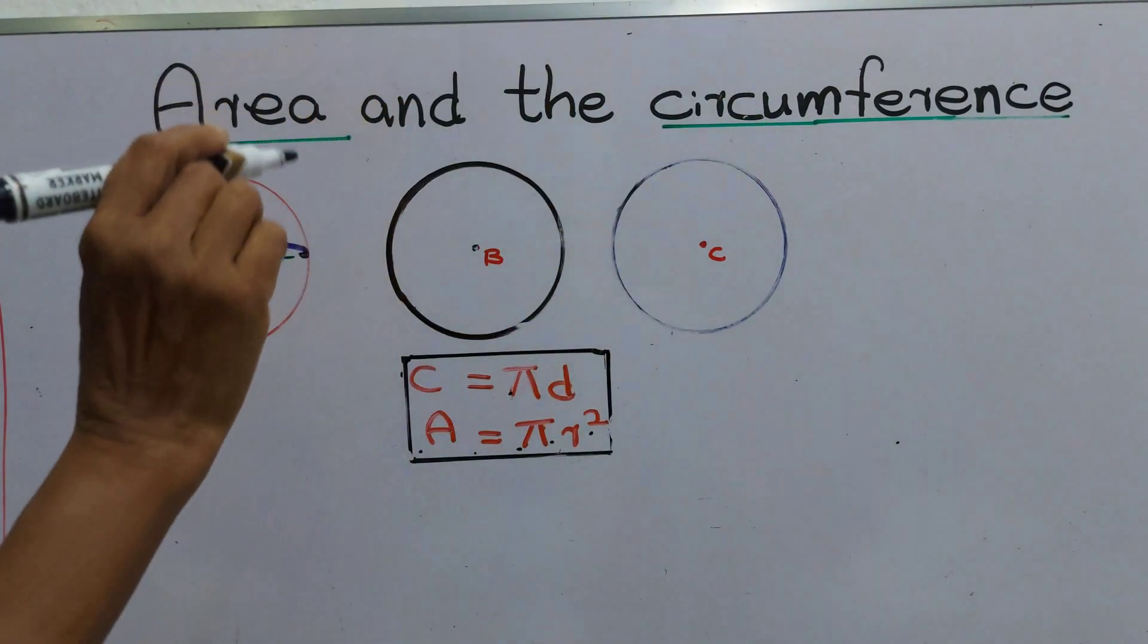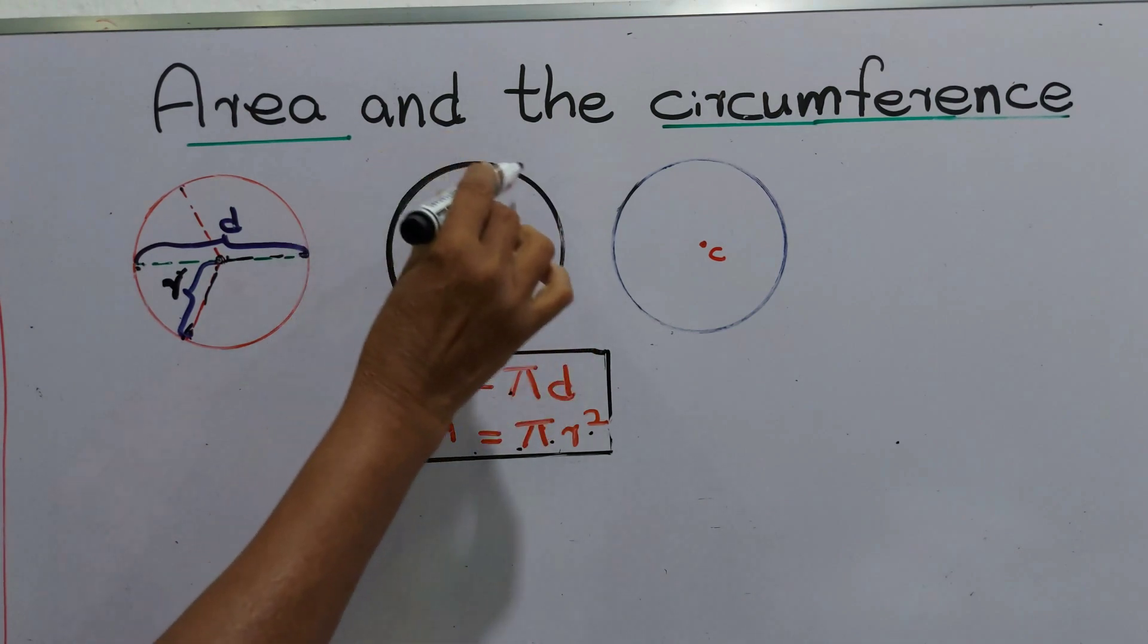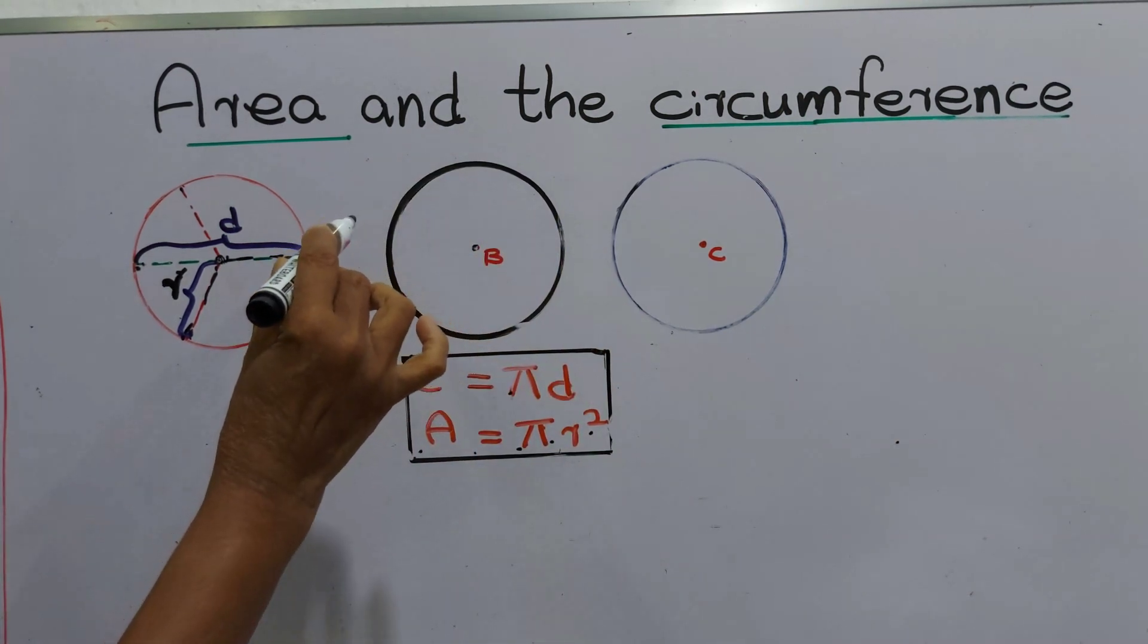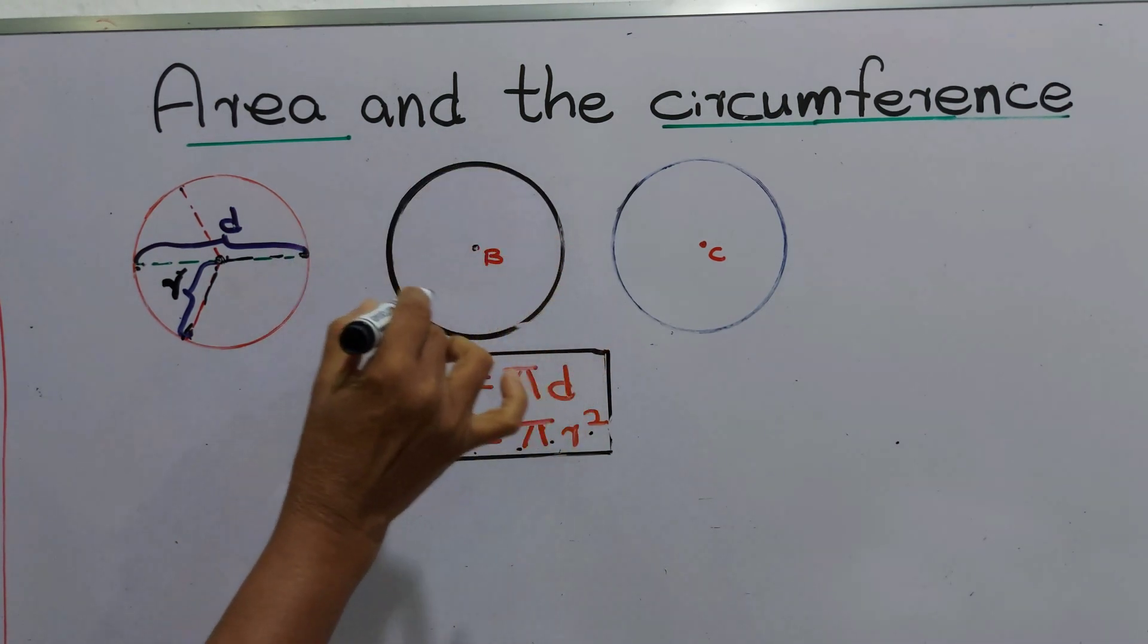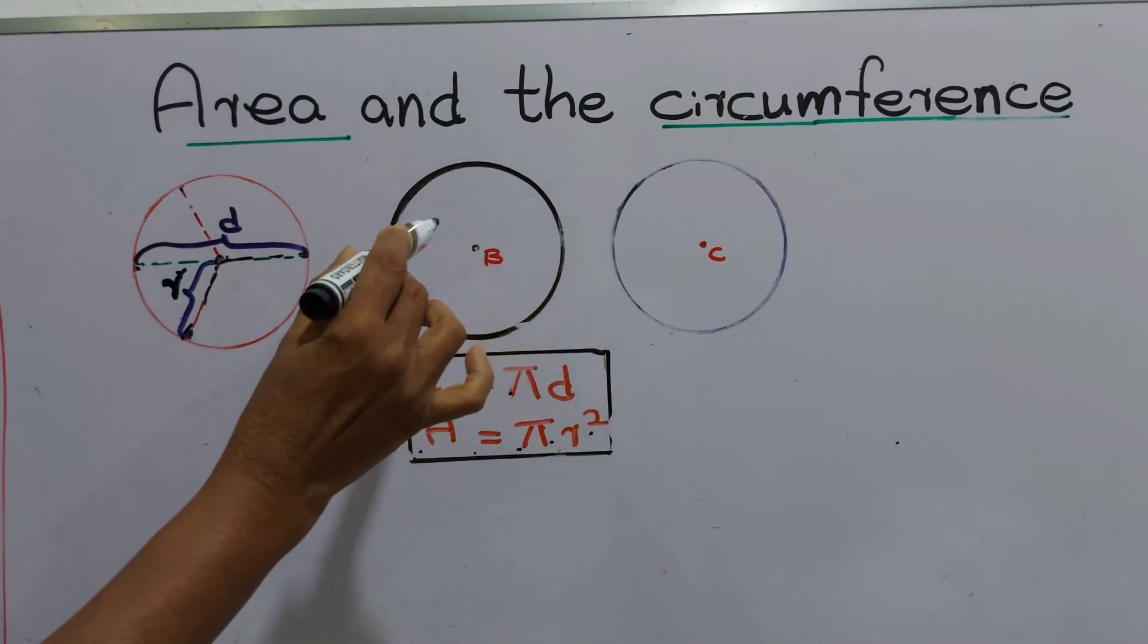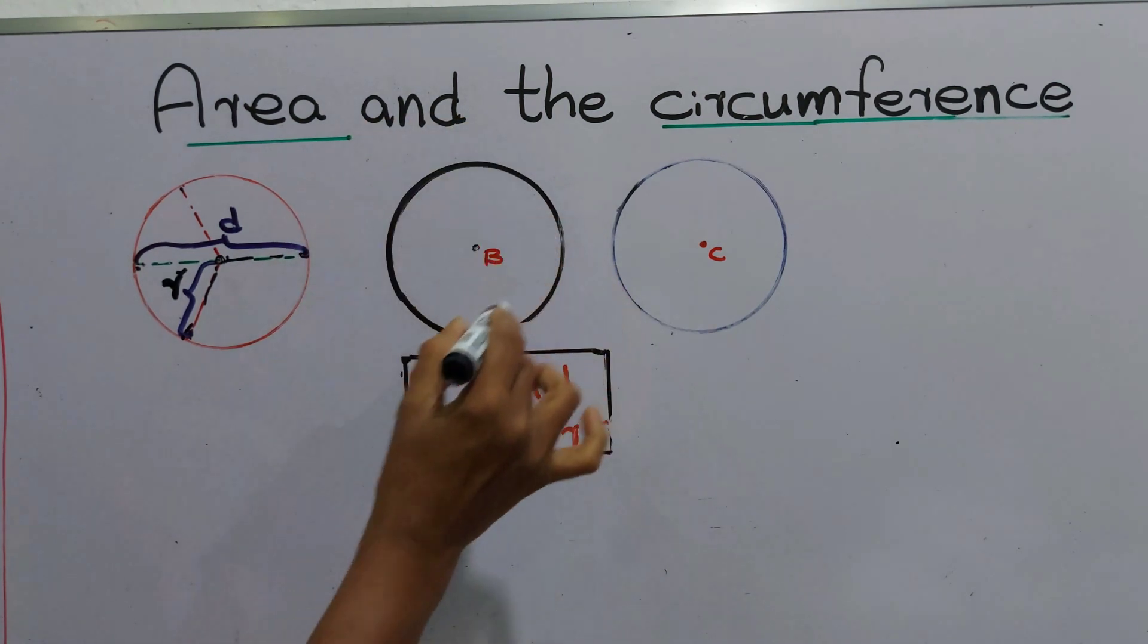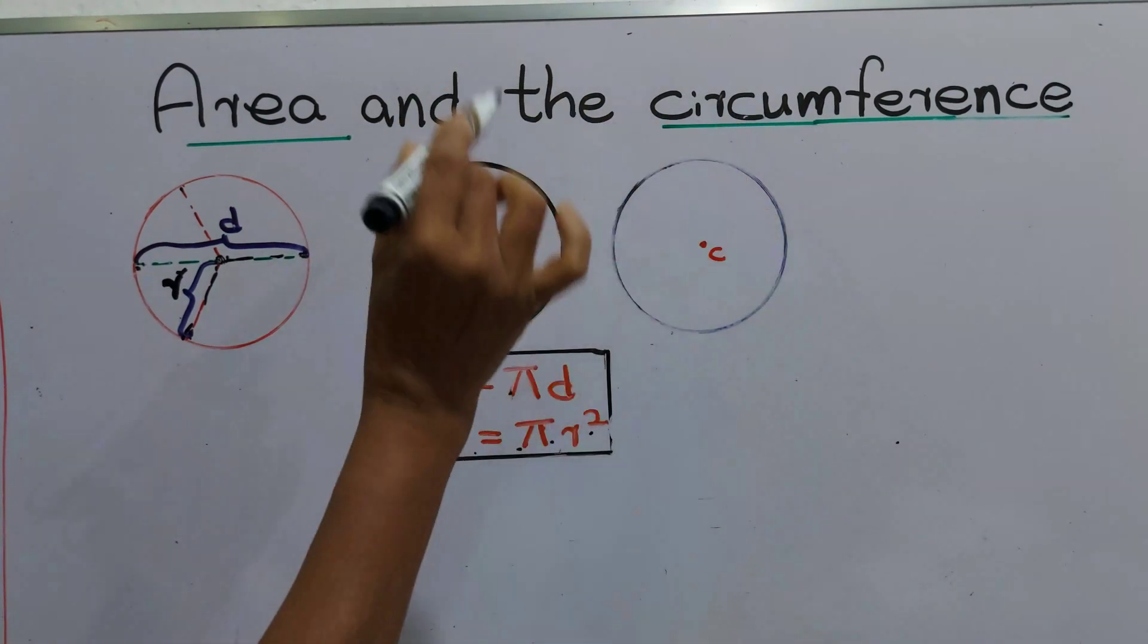When it comes to circumference, we can introduce it as the length of a circle's outline. It's called circumference, or distance around the boundary of a circle. The total distance around the outside of the circle is called the circumference.